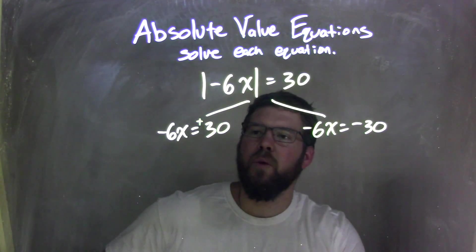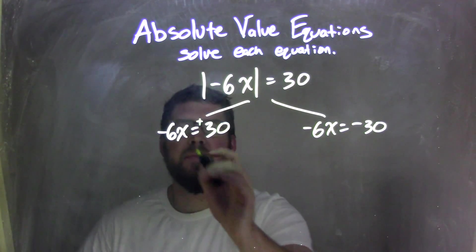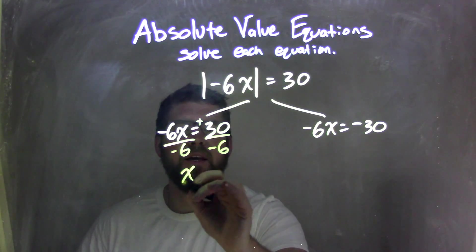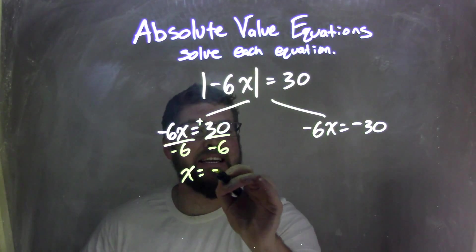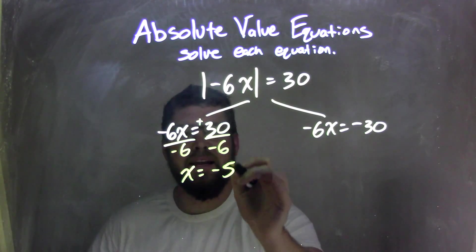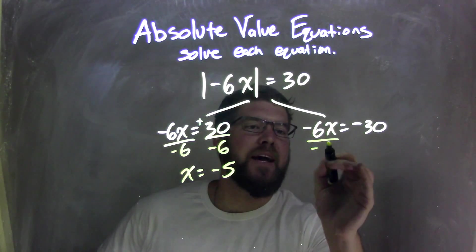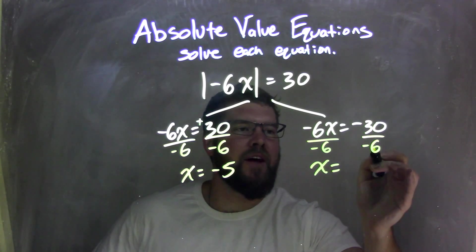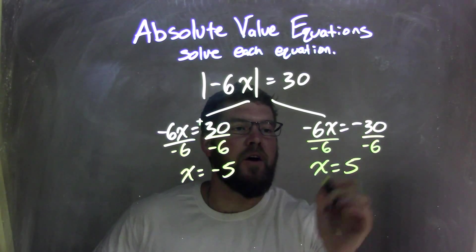And now we need to solve each equation. I'm going to divide both sides by negative 6, leaving me here with 30 divided by negative 6, which is negative 5. Positive divided by negative is negative. Divide by negative 6 here, and I have x equals negative 30 divided by negative 6, which is positive 5.